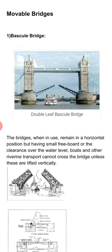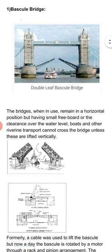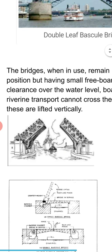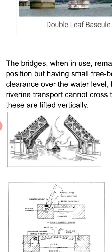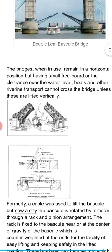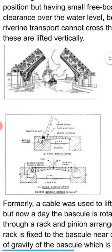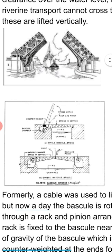London Bridge on the Thames River — this is a double-leaf bascule bridge. You can see the navigation channel here; the boat is coming and the two leaves are opened. You can see single-leaf as well as double-leaf bascule bridge. Initially it was a cable-lifted bascule bridge; after some years they used a pinion-and-rack arrangement to lift the bascule bridge.